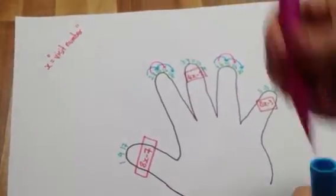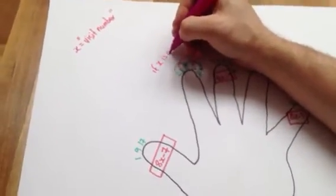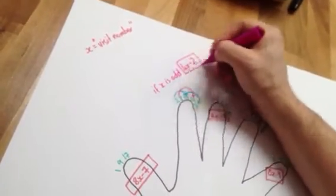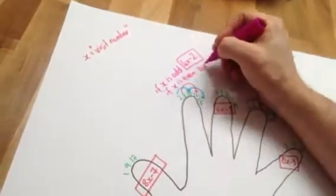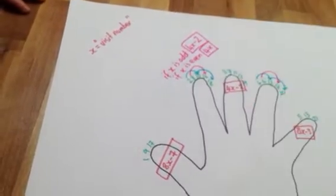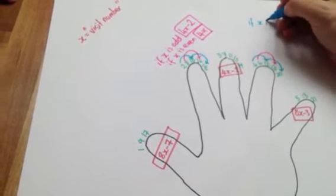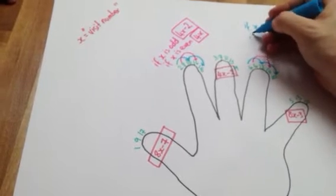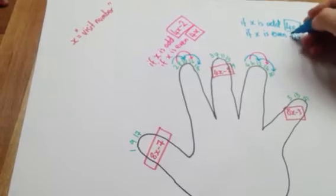So if X is odd, the formula is 4X minus 2 for this finger. So if X is even, it's simply 4X. Which is kind of neat, because on the other finger over here, if X is odd, the formula is 4X.